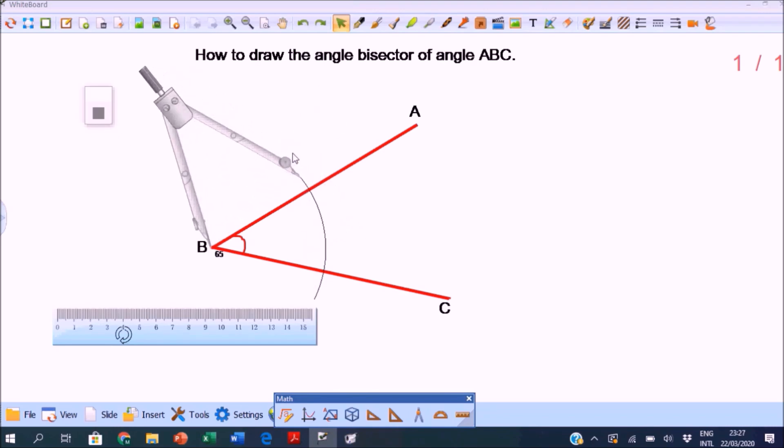Then draw an arc that crosses both BA and BC. Now move the compass point to where the arc crosses BC. You may adjust the opening of the compass or use the same radius.